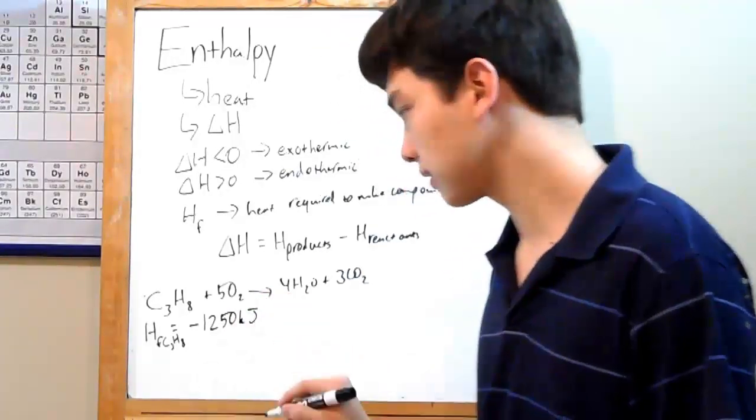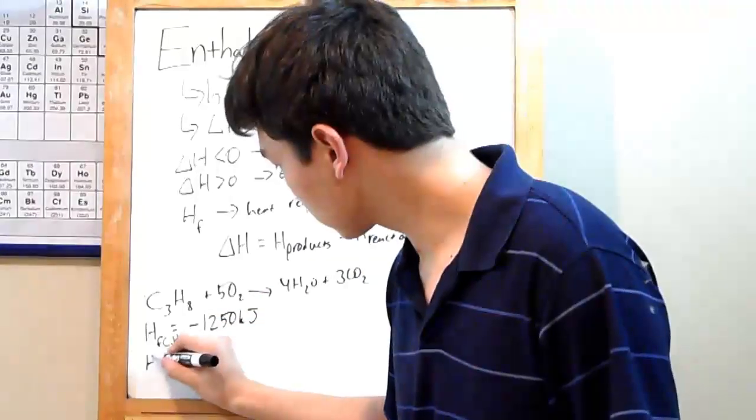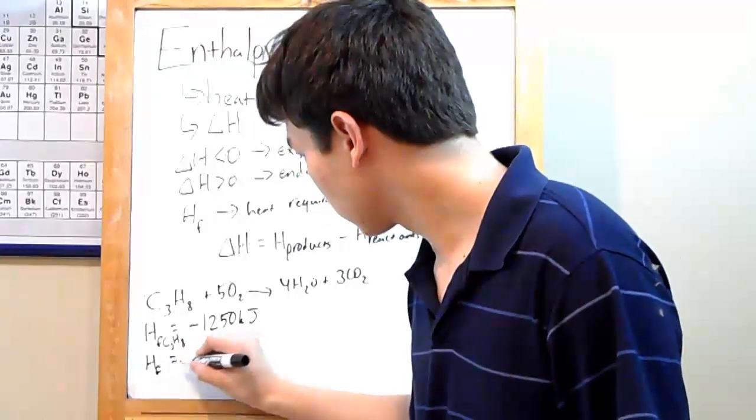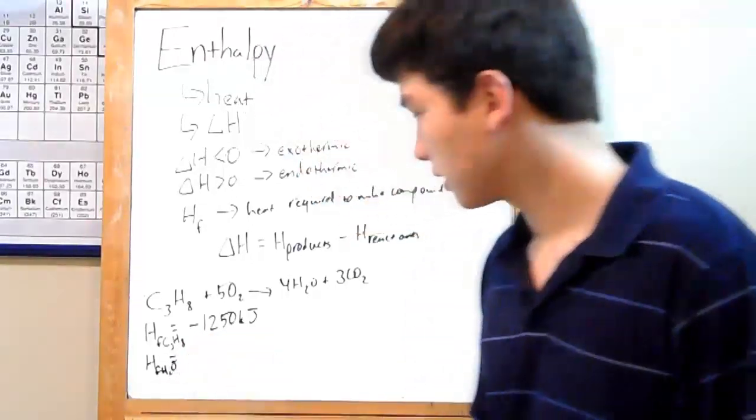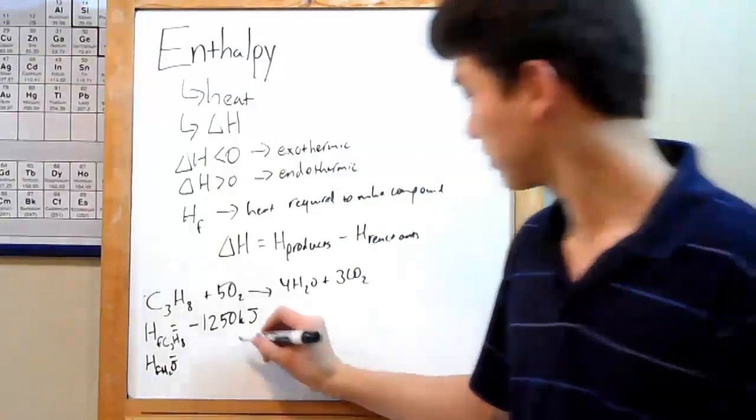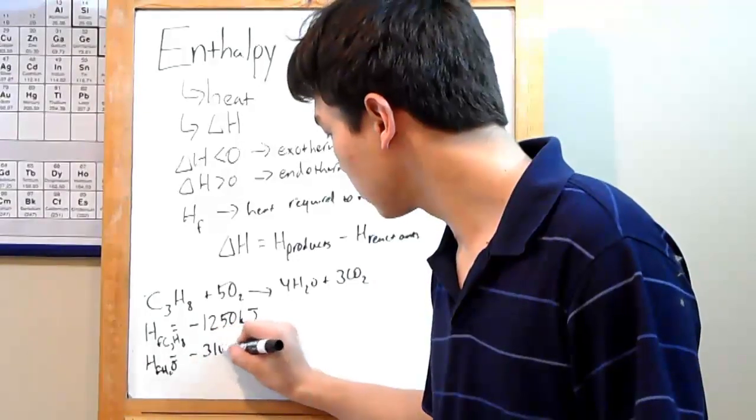Next, you'll need HF for water. That will be negative 310 kJ.